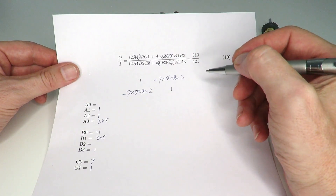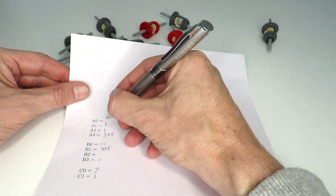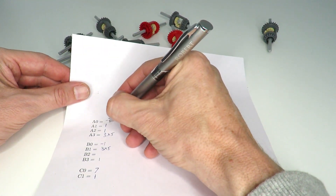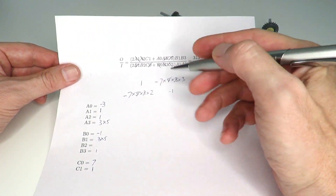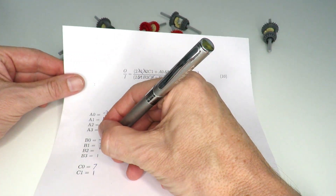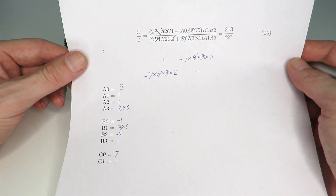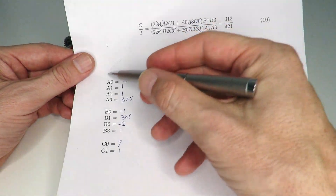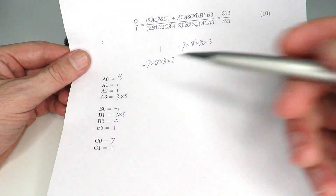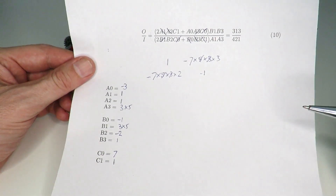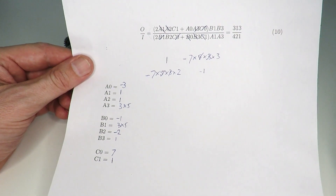That leaves a 2, a 3, and a minus sign. I'll set A0 = −3 and B2 = −2. That completes all the parameters — we've now chosen values that satisfy the equation and should give us a 313-to-421 gear ratio.